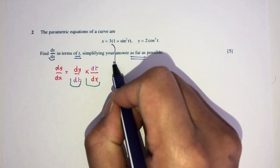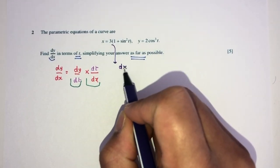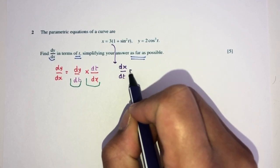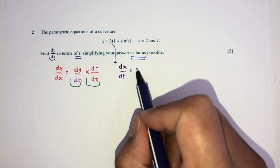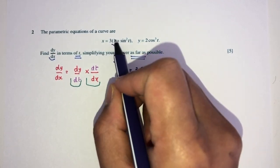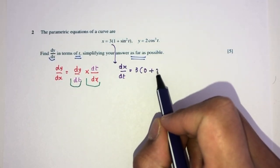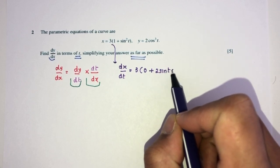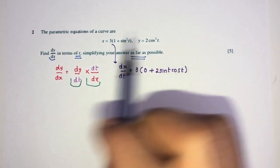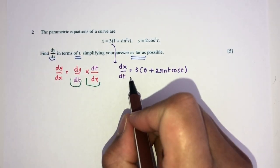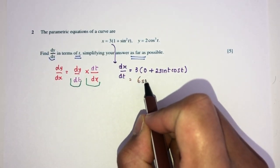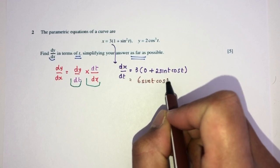So, we have to find this thing and this thing and then multiply them to find dy by dx. That's the idea behind this question. One by one. x is this. So, find dx by dt. That will be what? So, 3 is 3. It is only a multiple. Differentiate 1 will be 0. This will become plus 2 sin t cos t. Simplify. That will be 6 sin t cos t.